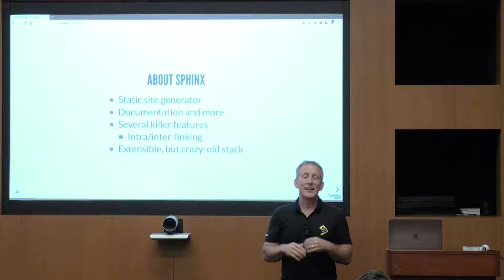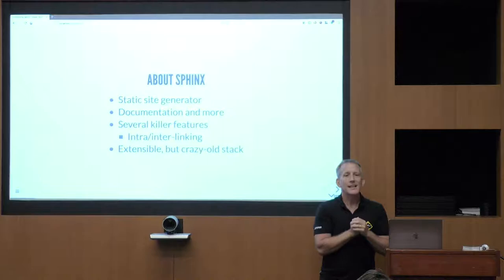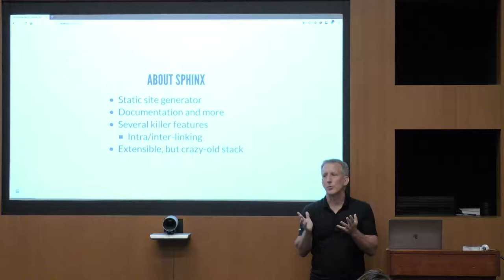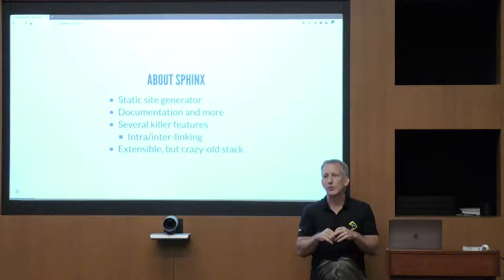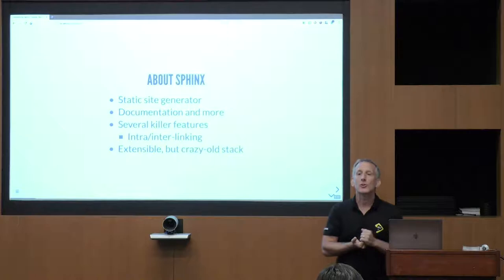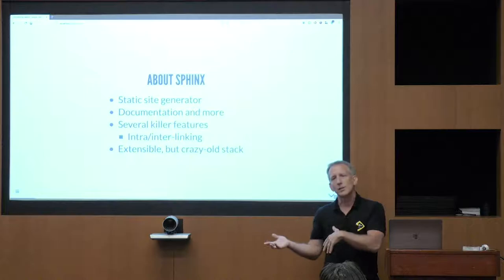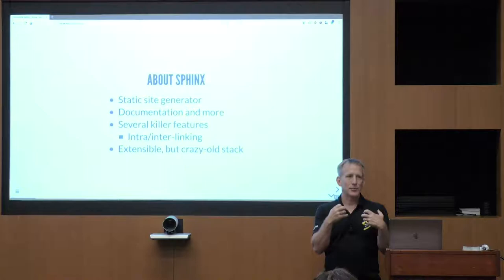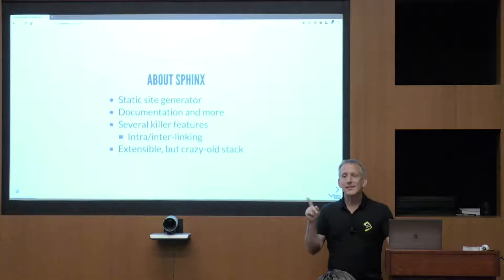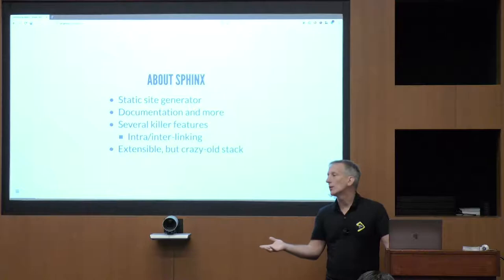Part of the problem is it's layers upon layers upon layers of Python history. It is primarily for documentation, and it is so great at documentation. Other programming languages besides Python do their thing in Sphinx. There's a site called Read the Docs which is based on Sphinx. It has several killer features. I've been doing a lot in Gatsby.js recently, before that Jekyll, Hugo, Pelican, Nikola — this rich interlinking thing that Sphinx does is a killer feature that none of those others do. It's extensible, but its stack is just crazy and old.